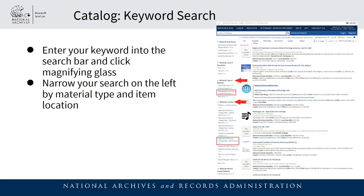The most straightforward way of searching the catalog is simply entering a keyword into the search bar and clicking the magnifying glass. Once you see a results page, you'll want to narrow your search by filtering by type of materials and location of materials — this will ensure your search results only show photographs in the holdings of the Still Picture Branch.